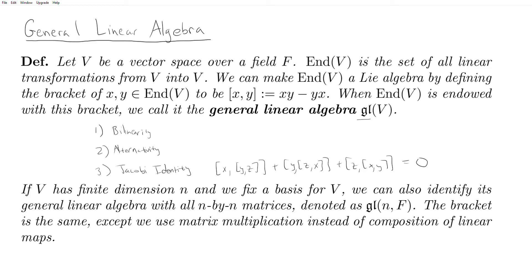To begin, let V be a vector space over a field F, and let End(V) be the set of all linear transformations from V into V. Recall that End(V) is itself a vector space over F. We can make End(V) a Lie algebra by defining the bracket of any two endomorphisms X and Y to be X composed with Y minus Y composed with X — this is composition of linear maps. When End(V) is endowed with this bracket, we call it the general linear algebra.